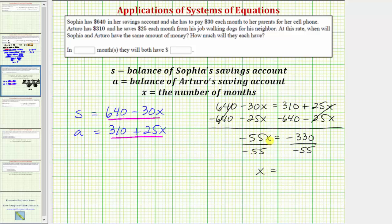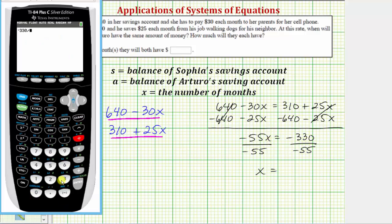And therefore x equals this quotient, negative 330 divided by negative 55 is equal to 6.